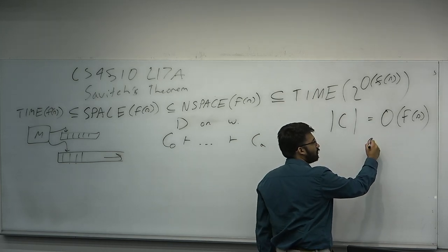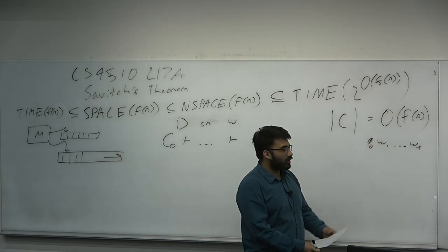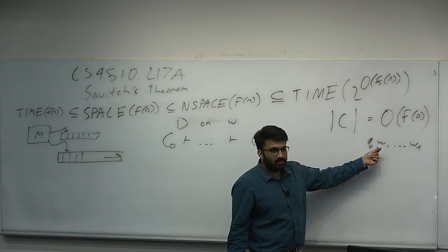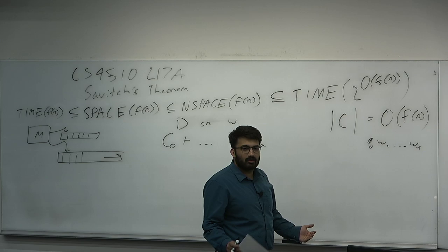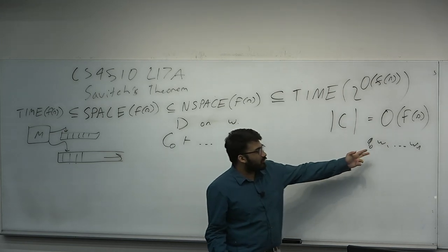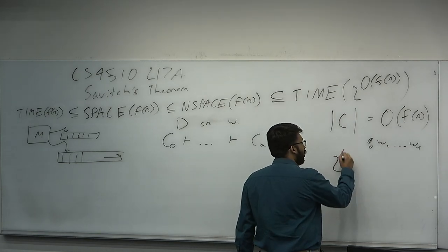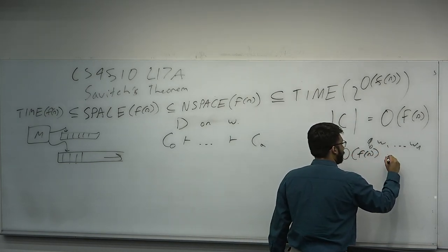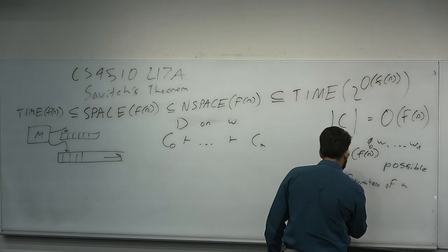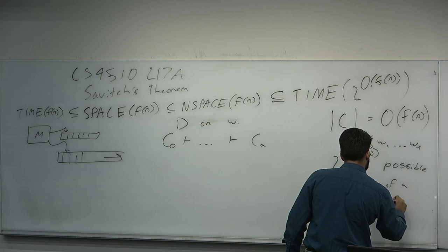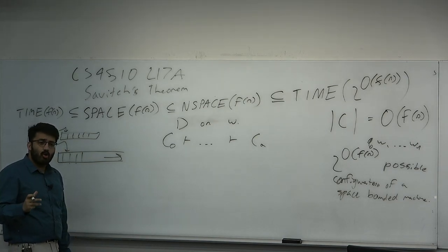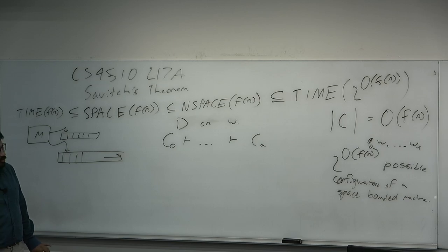Why? Recall the configuration is like Q0, w1, ..., wN. It's going to be approximately the space used — the entire contents of the tape, which must be less than or equal to the space bound, plus some constant symbol for the state and head position. So how many possible configurations are there? If there are, say, three possible symbols for each cell up to the space bound, then there are 2^(O(f(n))) possible configurations of a space-bounded machine.